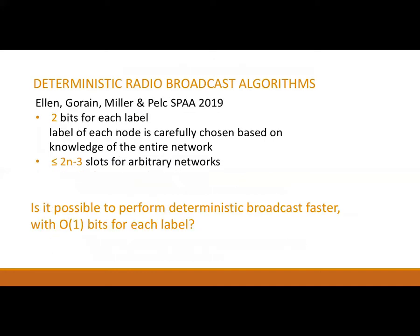Last year at SPAA, I had a paper with Gorain, Miller, and Pelc that showed two-bit labels are sufficient to perform deterministic radio broadcast for any network. Like the algorithms on the previous slide, the label of each node is carefully chosen based on knowledge of the entire network. We showed that this algorithm always completed within 2N minus 3 slots, and there are networks for which this algorithm does take 2N minus 3 slots. The question remained: is it possible to perform deterministic radio broadcast in fewer slots, still using constant size labels?